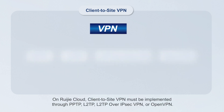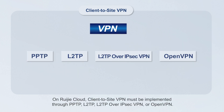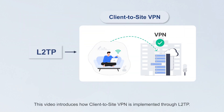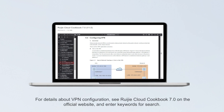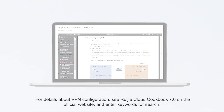On Wegea Cloud, client-to-site VPN must be implemented through PPTP, L2TP, L2TP over IPsec VPN, or OpenVPN. This video introduces how client-to-site VPN is implemented through L2TP. For details about VPN configuration, see Wegea Cloud Cookbook 7.0 on the official website and enter keywords for search.